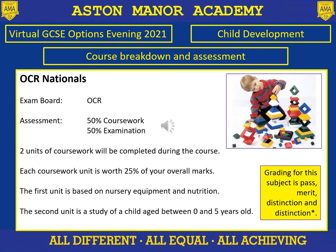The course follows the OCR national specification and comprises 50% coursework and 50% examination, with the two projects equalling 25% of the marks each. The examination is normally taken in year 11 in January, but there is an opportunity to re-sit in June. Candidates who do well in the January exam don't have to sit the June one, freeing up more time to focus on other subjects.